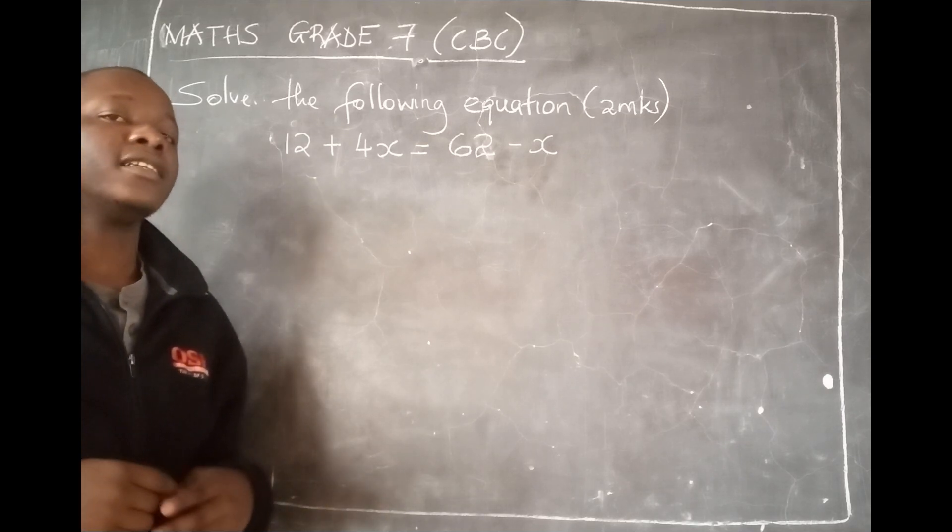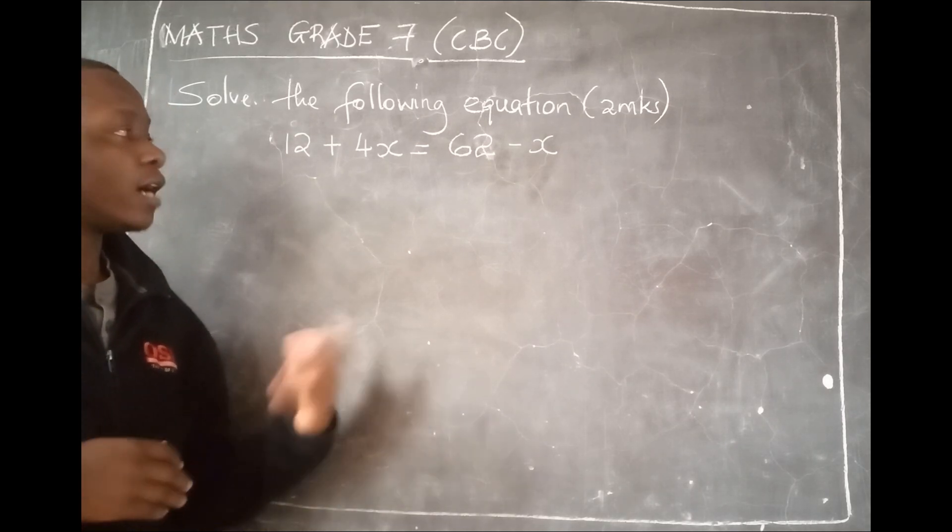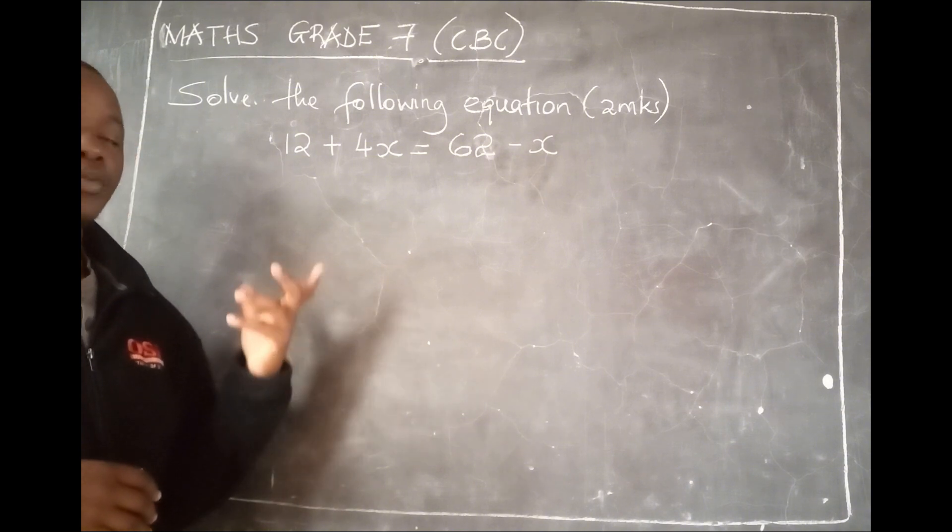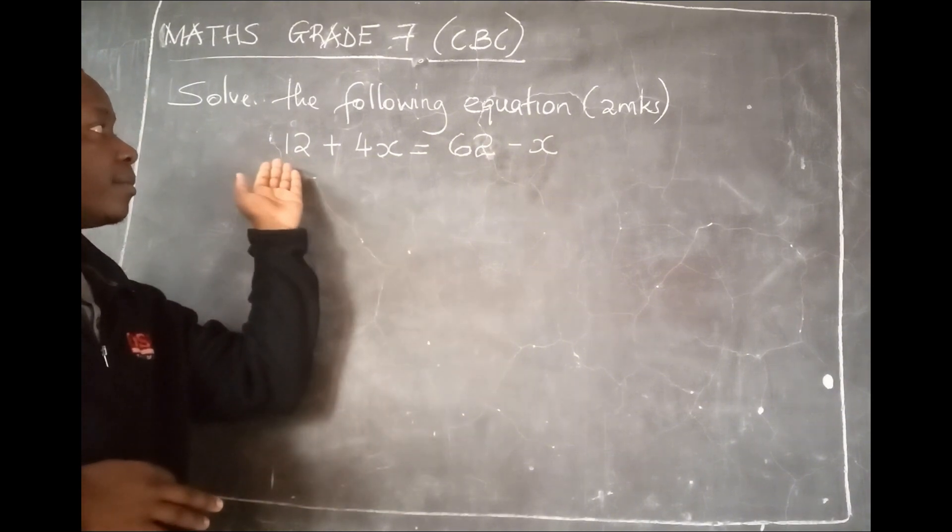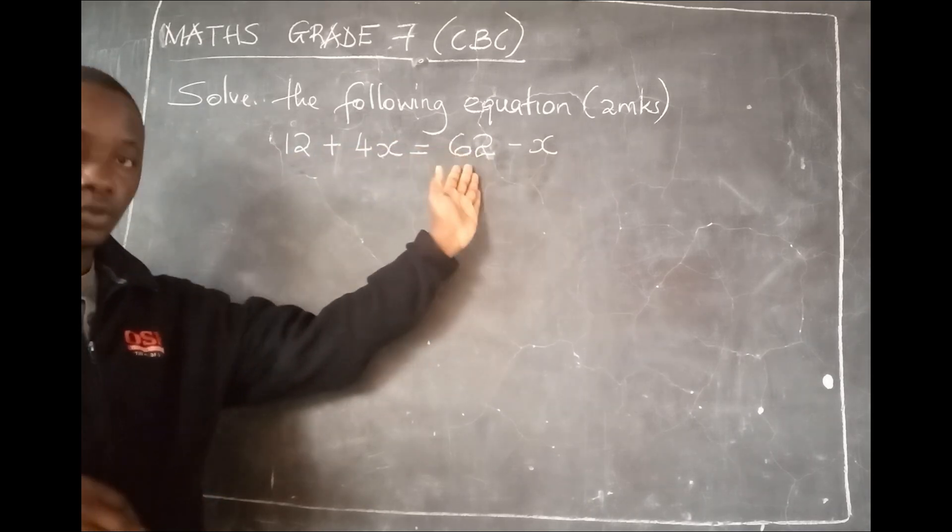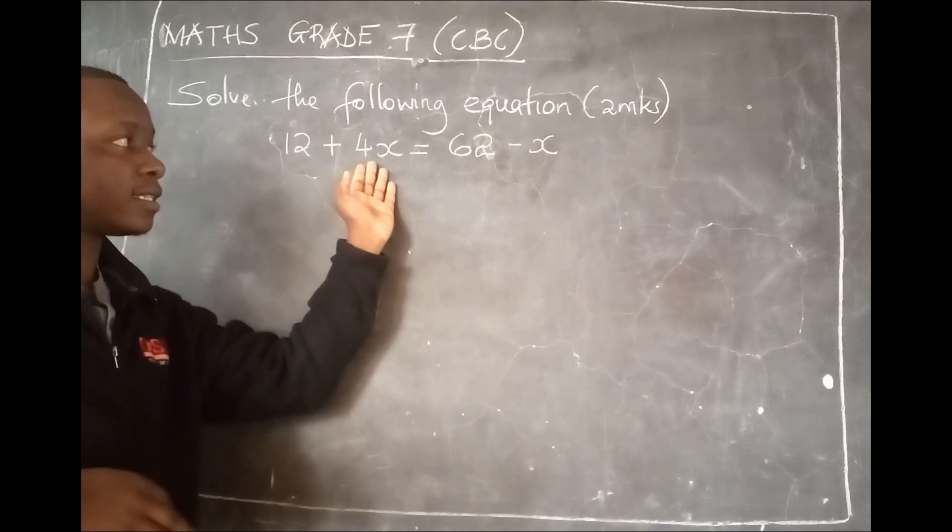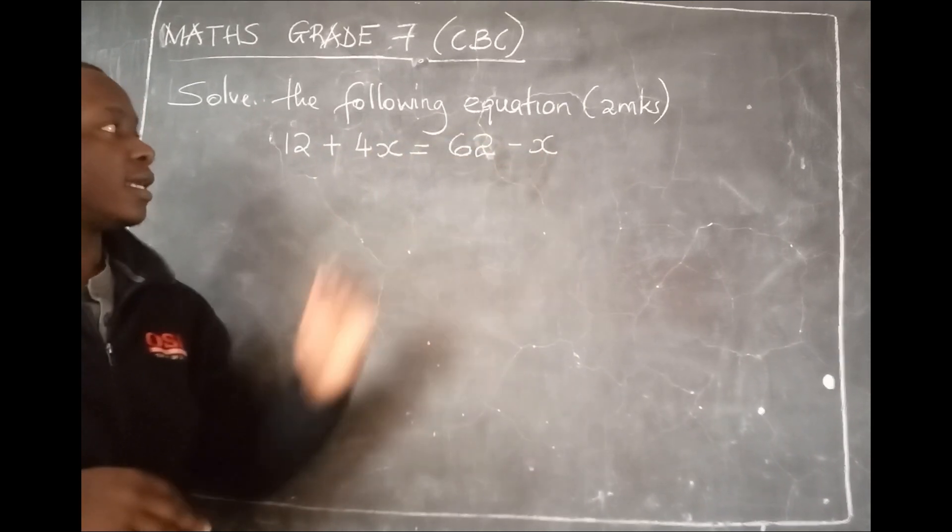In short, they are telling you to find the value of x. How do you find the value of x? You put the like terms together. In this case, the like term to 12 is 62, and the like term to 4x is x.